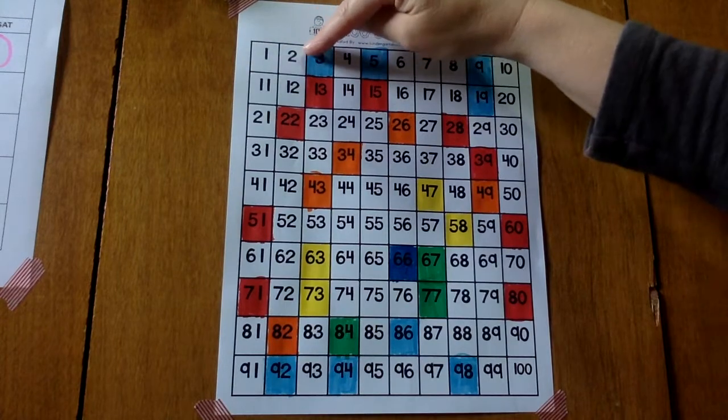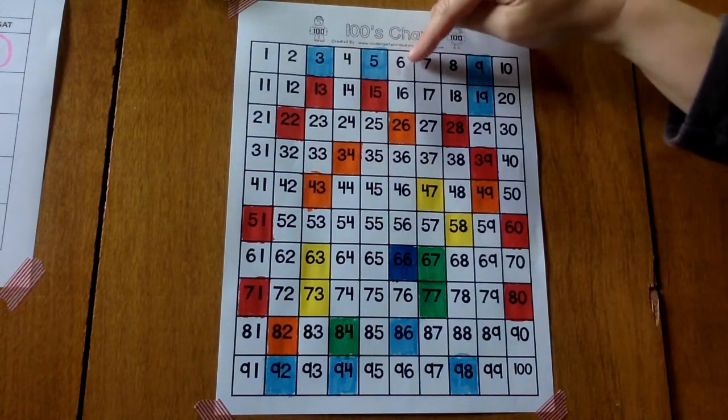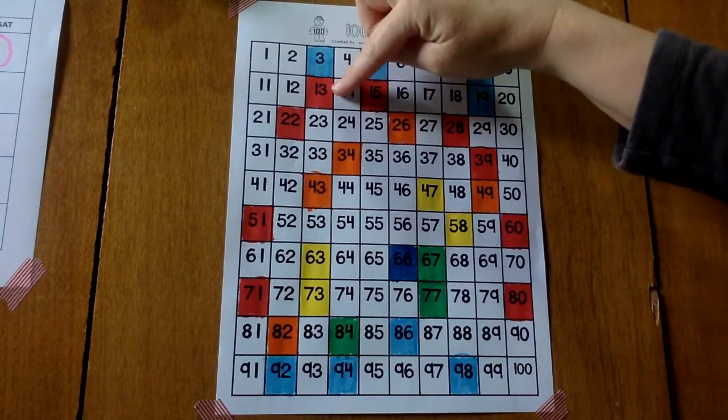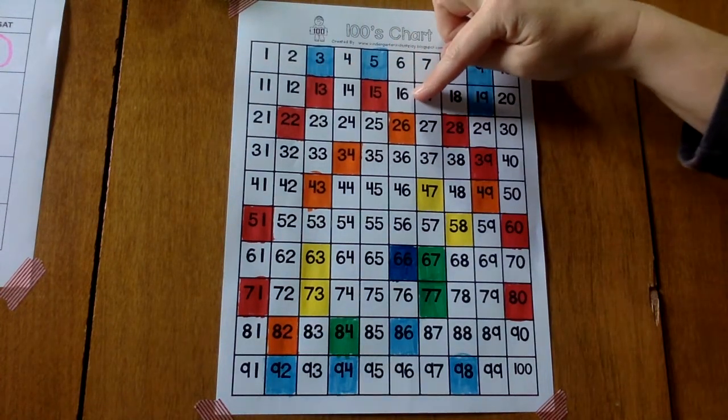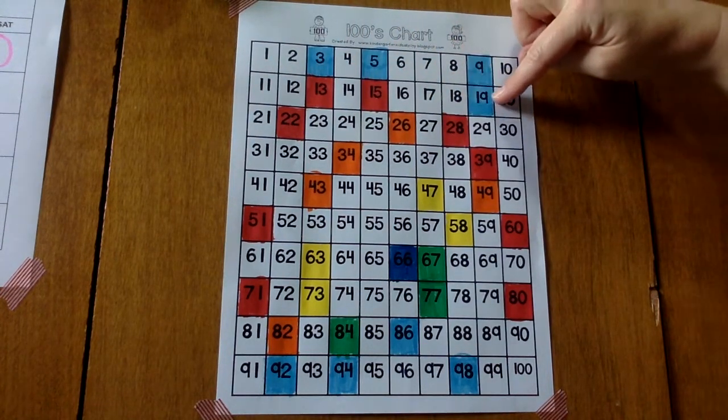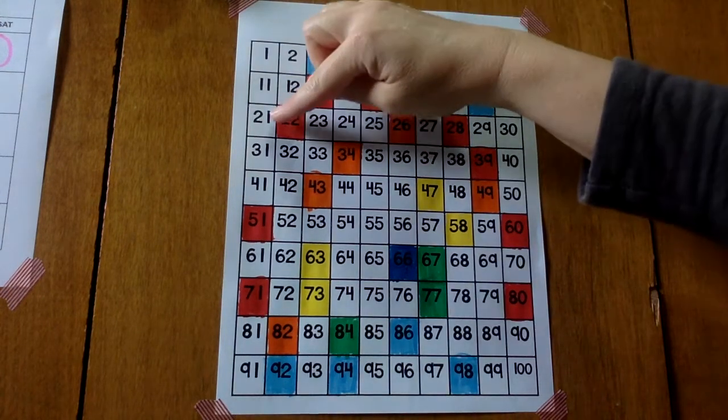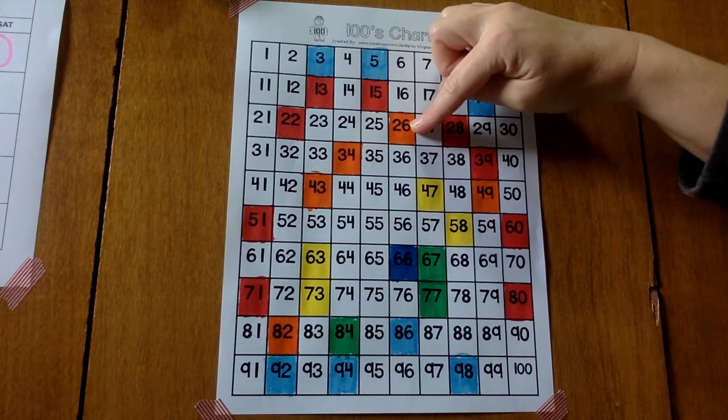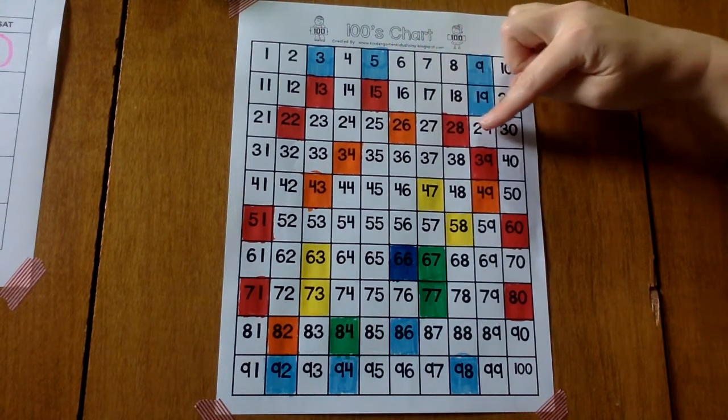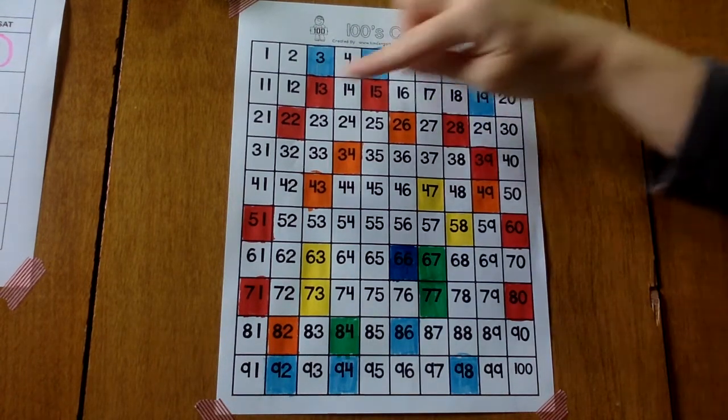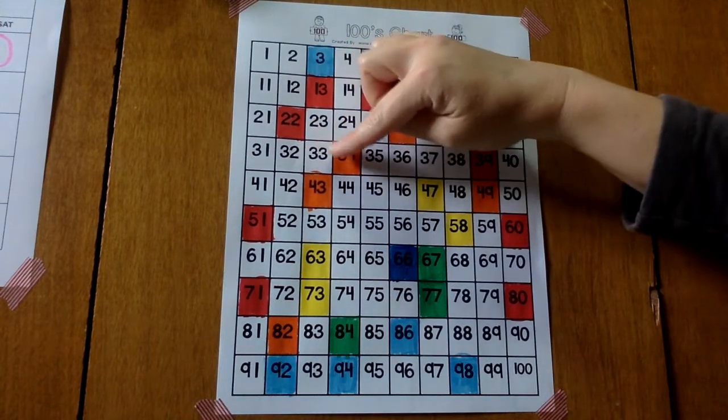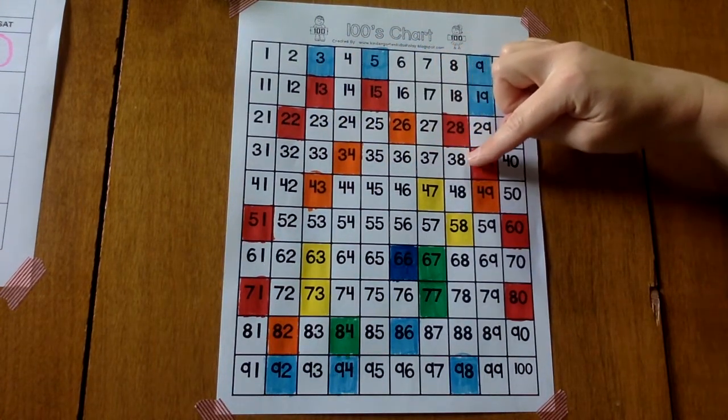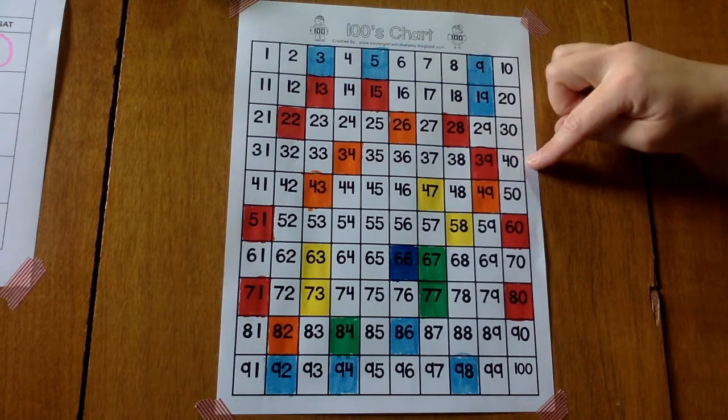Here we go. 1, 2, 3, 4, 5, 6, 7, 8, 9, 10, 11, 12, 13, 14, 15, 16, 17, 18, 19, 20, 21, 22, 23, 24, 25, 26, 27, 28, 29, 30, 31, 32, 33, 34, 35, 36, 37, 38, 39, 40.